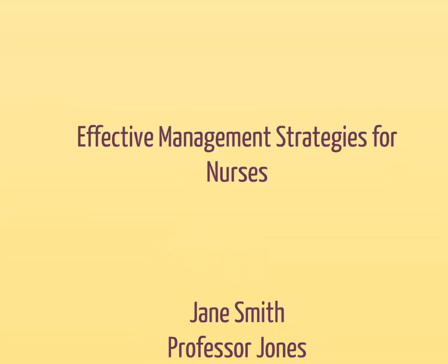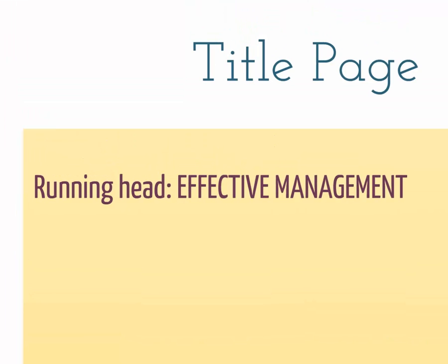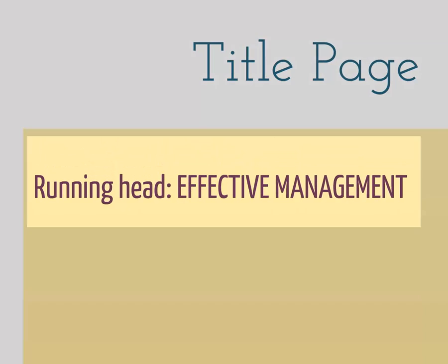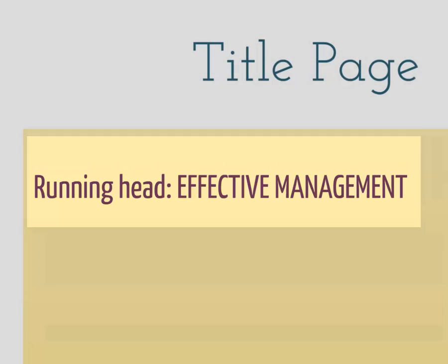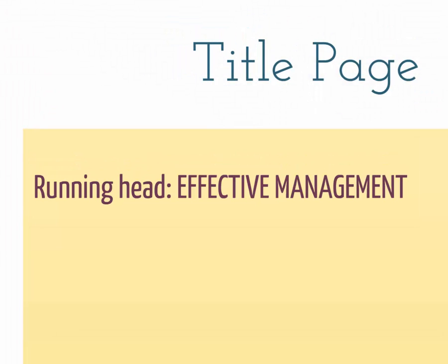Your title page also tells the reader what the paper's running head will be. A running head is a shortened version of your title and appears on the top of every page in your paper. On the top of the title page, your header should have the words 'running head' followed by a colon and then your shortened title in all caps. The header will also have your page numbers on the right.